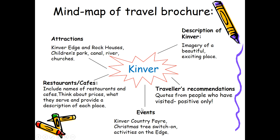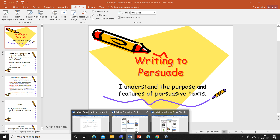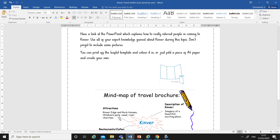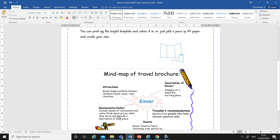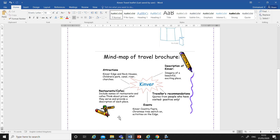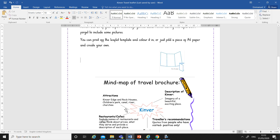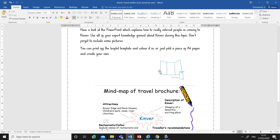You could also do a little feature on the events that take place in Kinva — the Kinva Country Fair, which many of you will have been to; the Christmas tree switch-on; and sometimes there are activities up on Kinva Edge. That's your mind map — all the sections and paragraphs you might like to include. There's the mind map again for you to look at. You've got your template or your leaflet with lots of sections, lots of pictures, and an eye-catching front page.